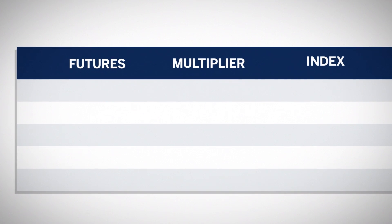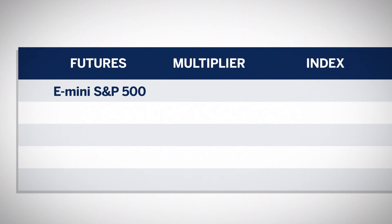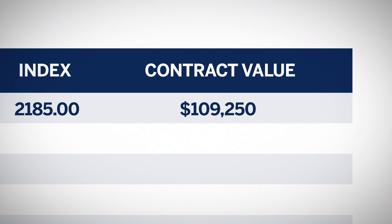For example, assume the e-mini S&P 500 futures are priced at $2,185 even. The multiplier for this contract is $50. At this price, the notional value would be $109,250.